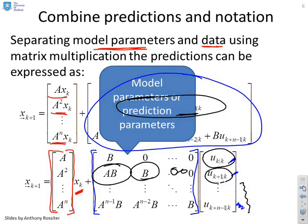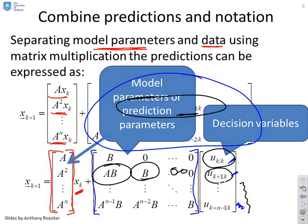And the key thing is you'll find I've now got matrices of model parameters. There they go. And I've got vectors which have got the signals in, the x and the u.